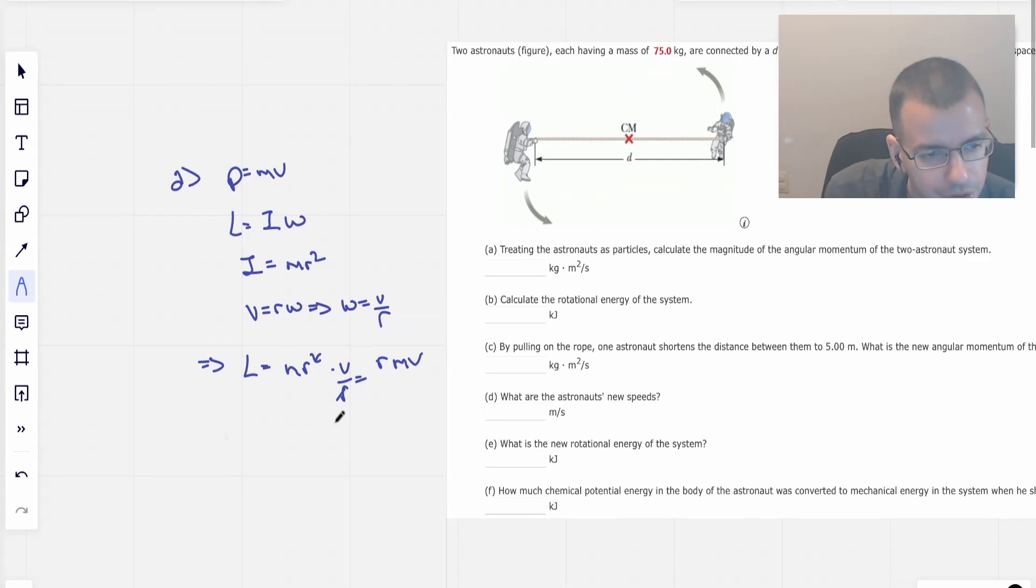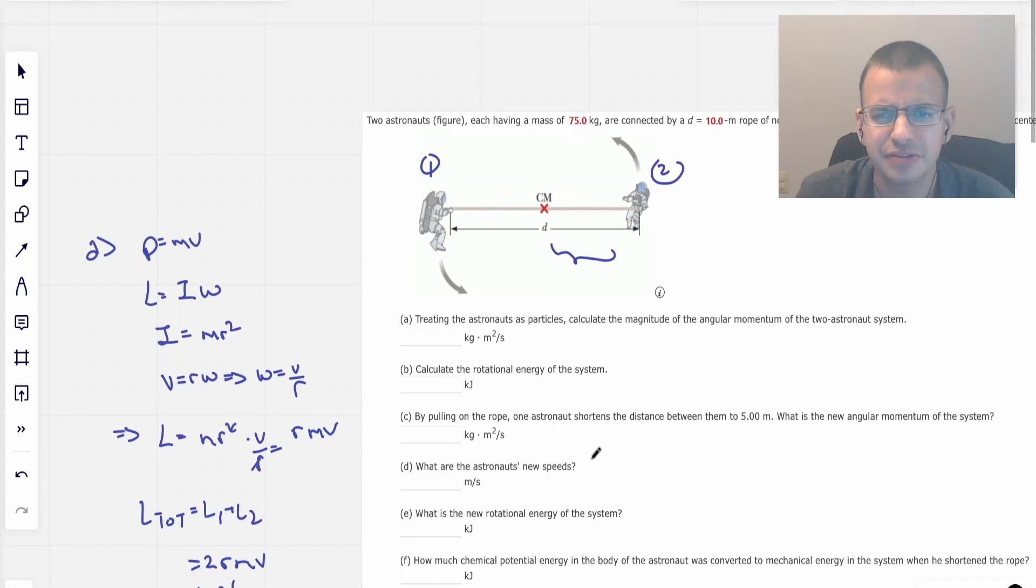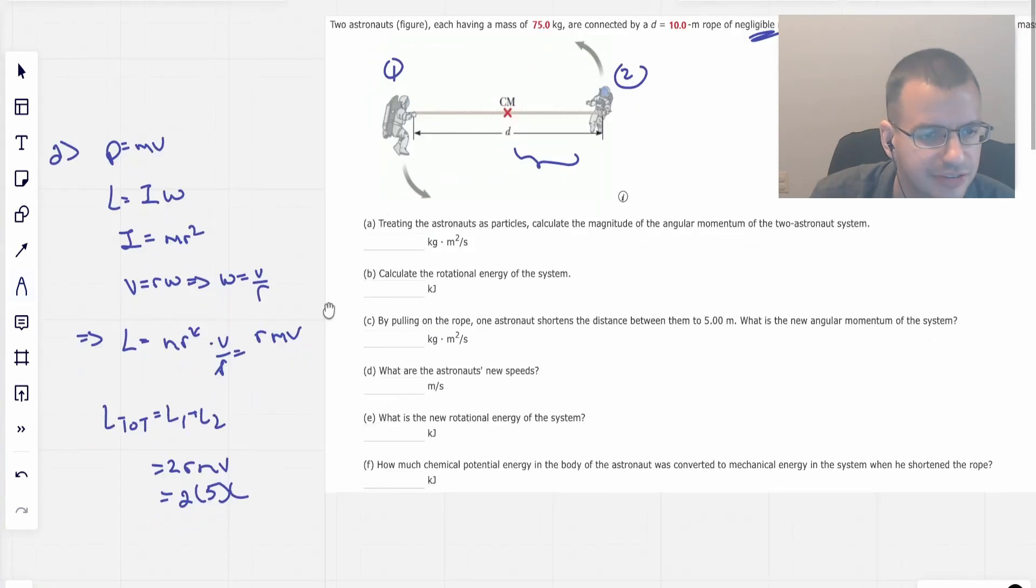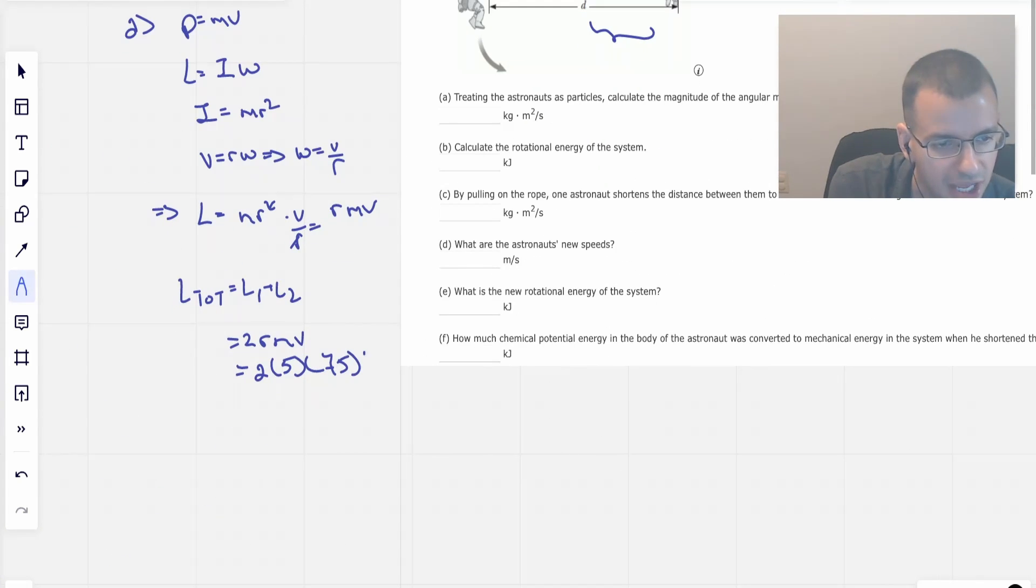And so we're going to do the total angular momentum will be L1 plus L2, which is just going to be rmv times 2, which is going to be 2 times r. I don't know if d for diameter or distance, but we're going to call it that. It's going to be 2 times 5 times their mass, which is 75, times their velocity 4.75 meters per second.